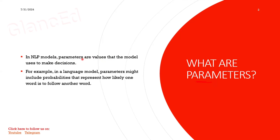For parameters you will assign some values — in the salt example, you assigned a value like half a spoon. The same goes for model parameters: you assign values to get accurate results. In language models, guessing the next word uses probabilities calculated from the data, and this probability is nothing but a parameter.